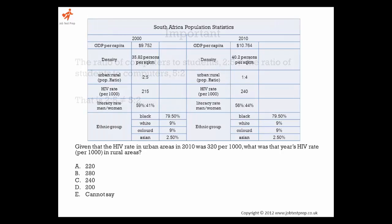The chart shows some statistics about the South African population. We see from the chart that the total rate of HIV in 2010 is 240 per thousand or 24%.